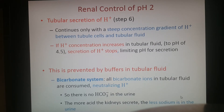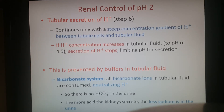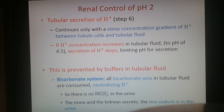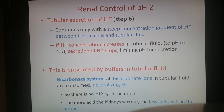This secretion only works down to a particular pH. As hydrogen ions are secreted into the tubular fluid, they lower its pH; once it reaches 4.5 — fairly acidic — secretion stops to prevent tissue damage. This is prevented by buffers in the tubular fluid: the bicarbonate system's bicarbonate ions bind to hydrogen ions and neutralize them. In a urinalysis, you shouldn't see bicarbonate in urine because it should be binding to the hydrogen.